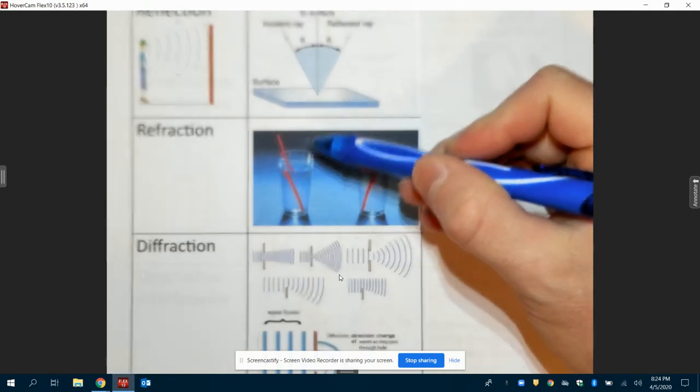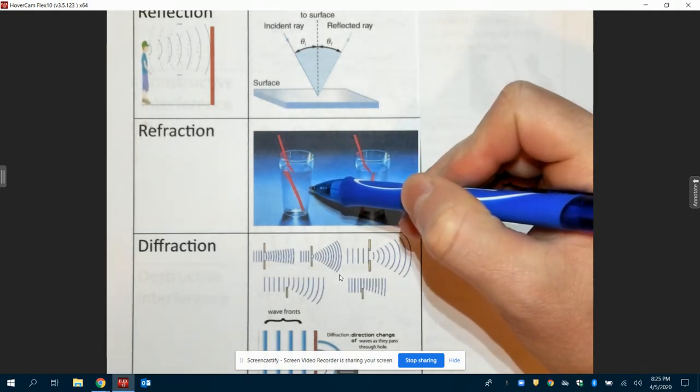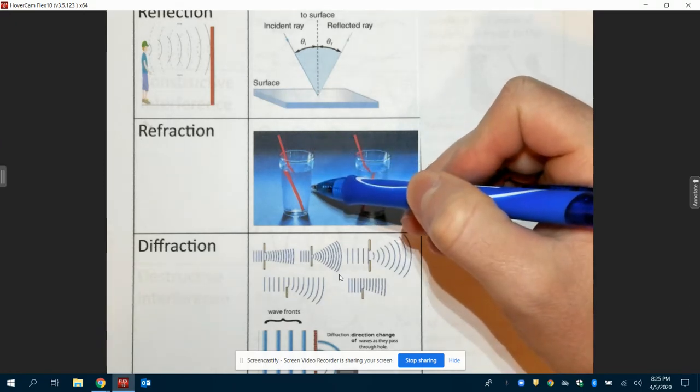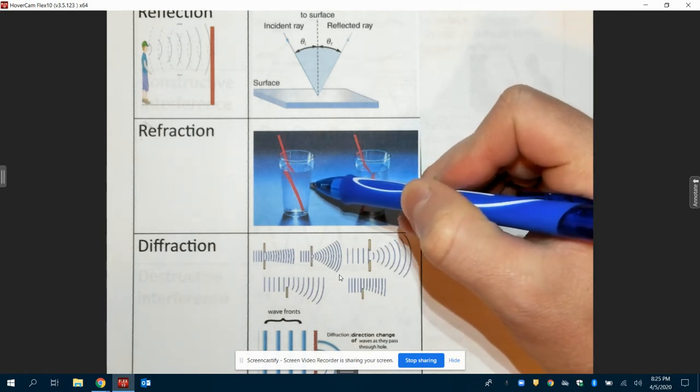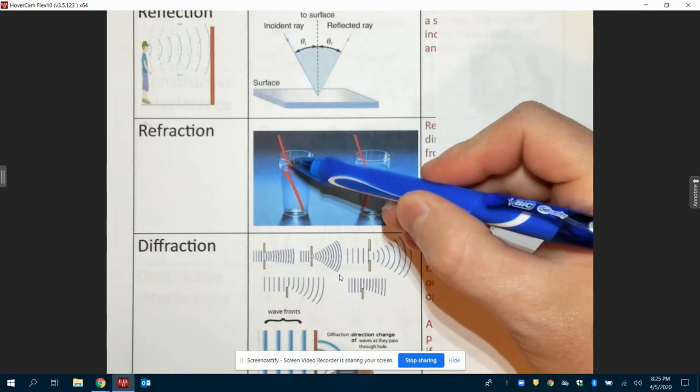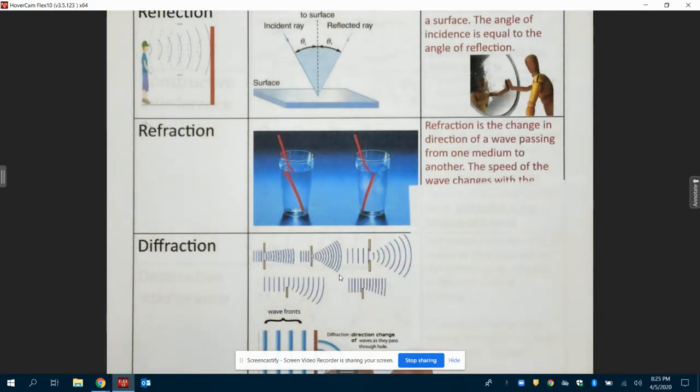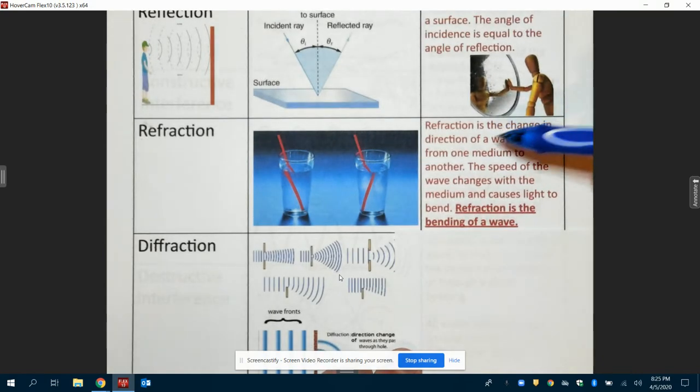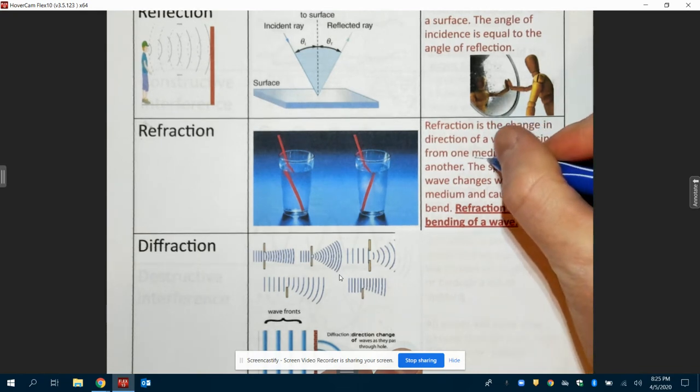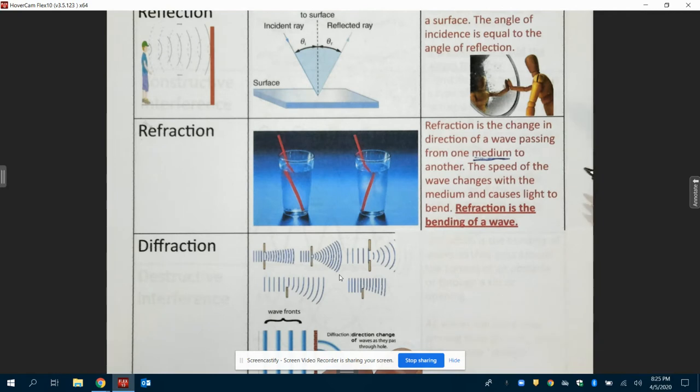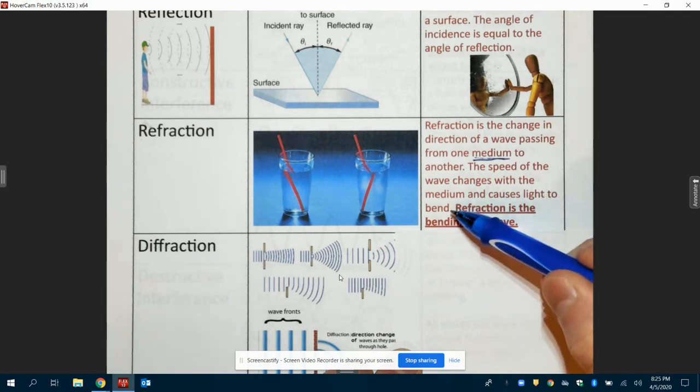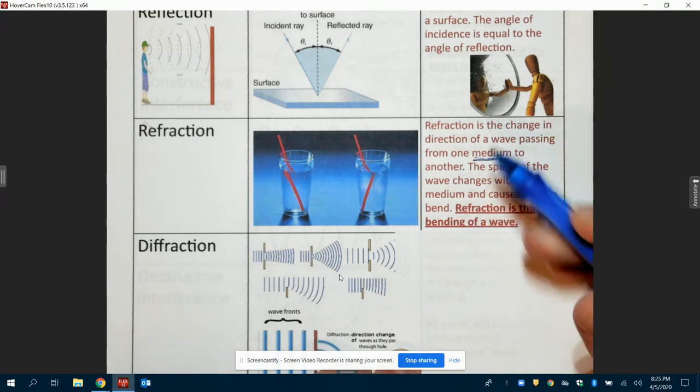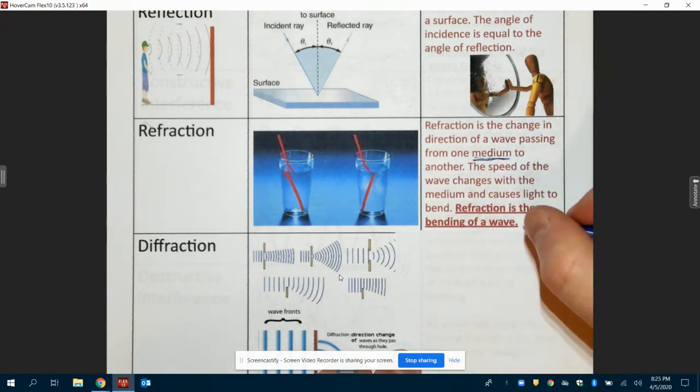Essentially what is happening is this: The light is going to travel at a different speed in air than it does through liquid like water. Light travels faster through air than it does through water. It's going to slow down because it's got to push through more material, more stuff here. So because of that, it's going to cause the light to get to your eyes at a different amount of time because the speed changes. So what refraction is, is the change of direction of a wave passing from one medium to another. When we say medium, medium is things like air, water, anything that a wave can travel through. The speed of the wave changes with the medium and causes light to bend. Refraction is basically just the bending of a wave as it changes mediums.